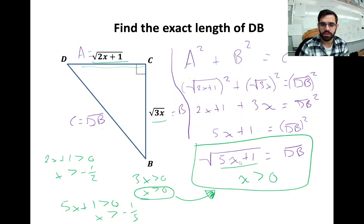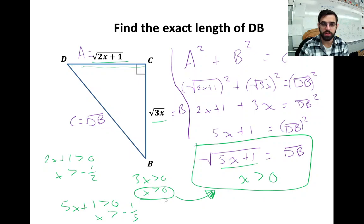We can also check the third side: 5x + 1 > 0 means x > -1/5. But 0 is still more restrictive than -1/5, so we keep x > 0 as the domain restriction for this triangle. The answer is DB = √(5x + 1), such that x > 0.